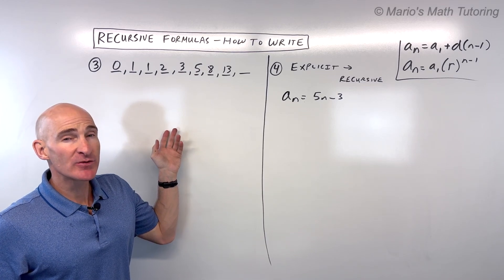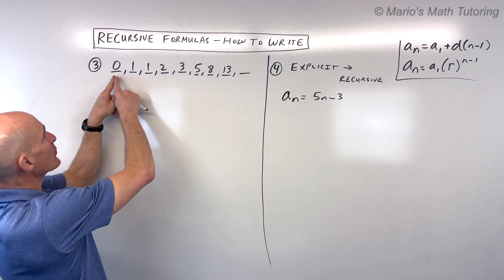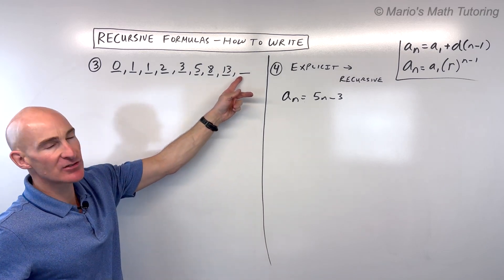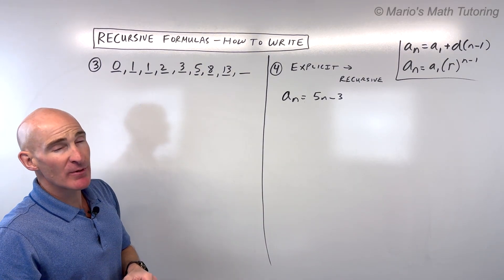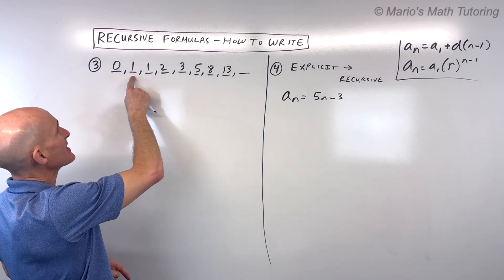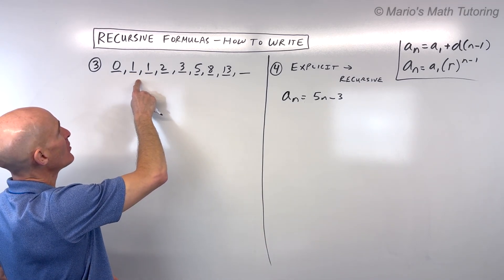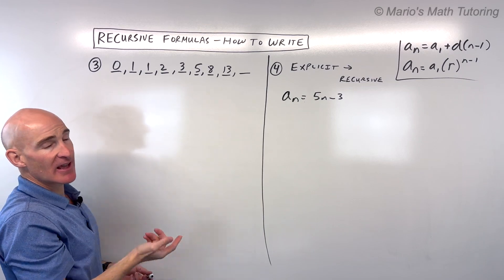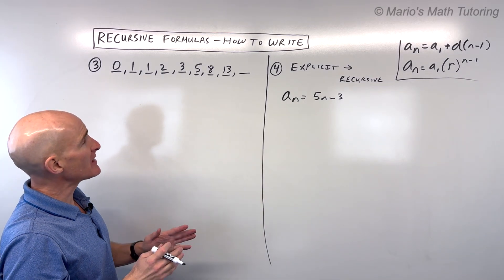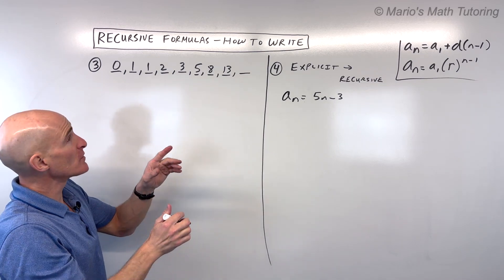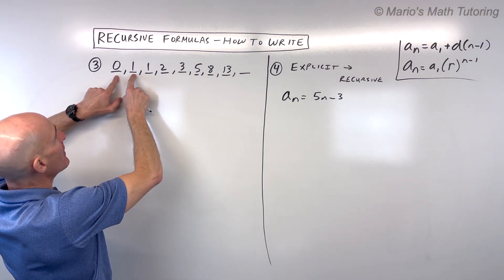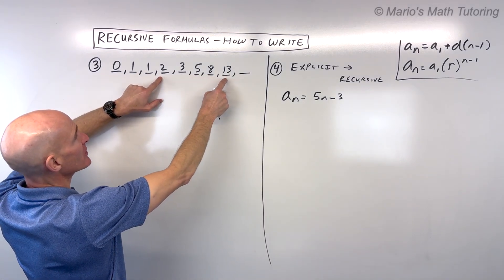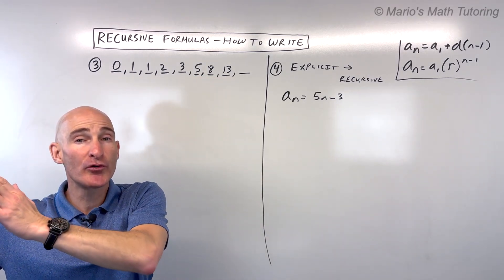Let's dive into number 3. This one's a little bit more challenging — see if you can recognize the pattern. We've got 0, then 1, then 1, then 2, then 3, then 5, then 8, then 13. It's not arithmetic — I'm not adding the same thing each time. It's not geometric either — 0 times anything would be 0. Something else is going on. To get the second 1, I'm adding 0 and 1 together. To get 2, I'm adding 1 and 1. To get 5, I'm adding 2 and 3. So what I'm doing is adding the two previous terms.